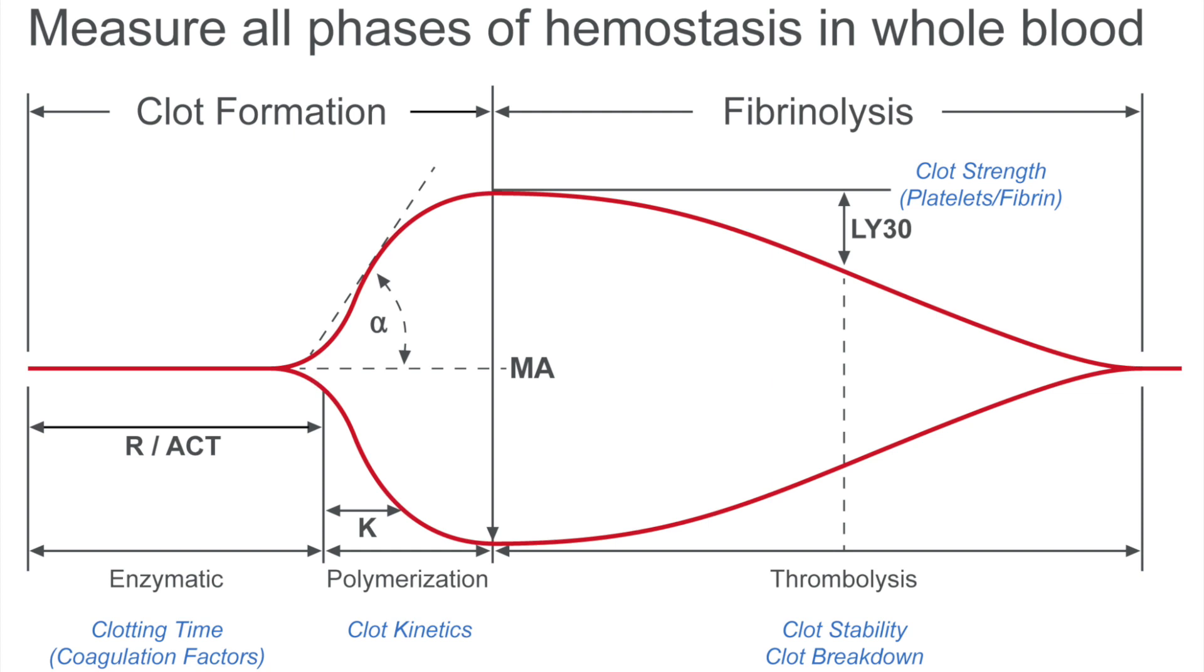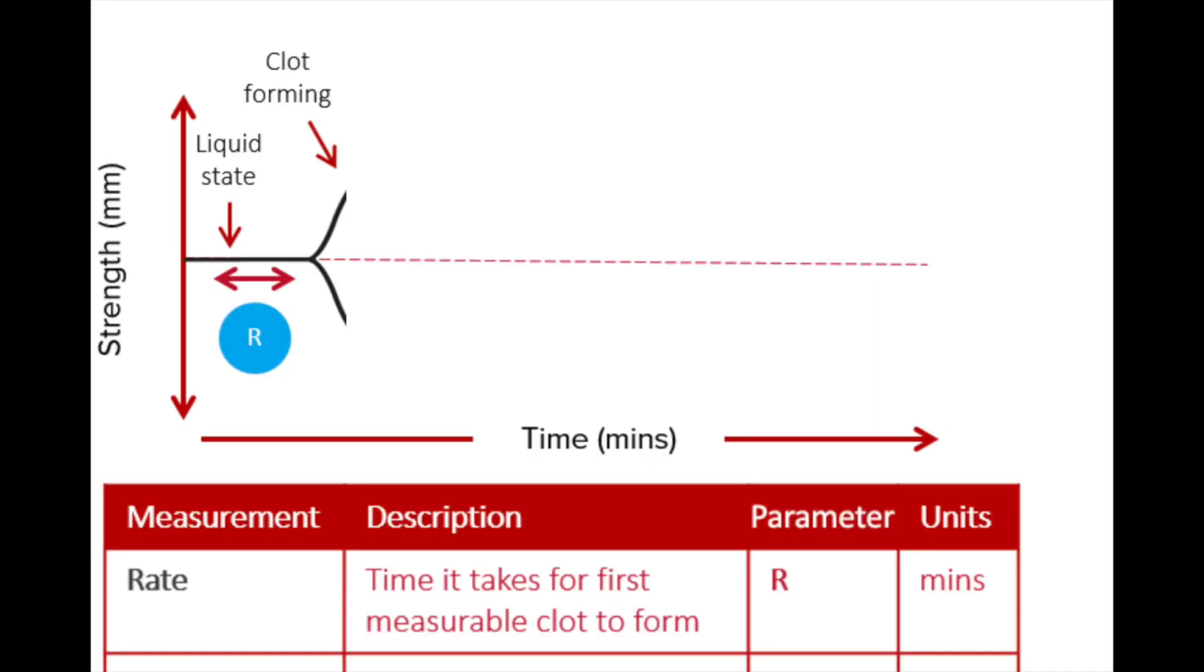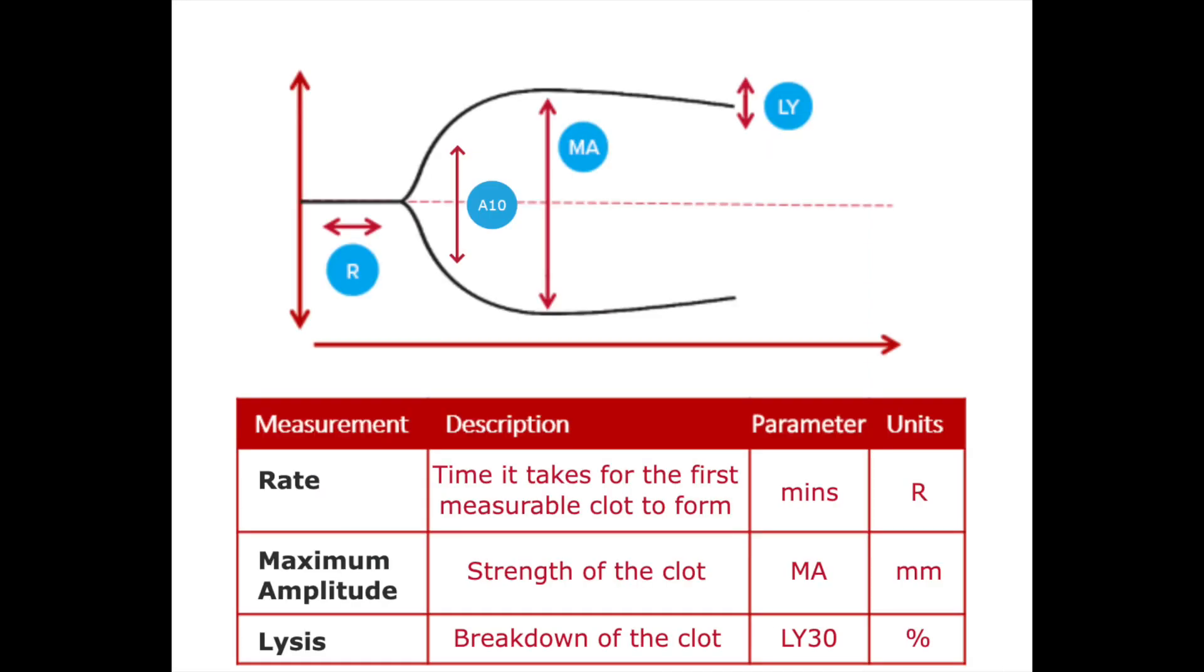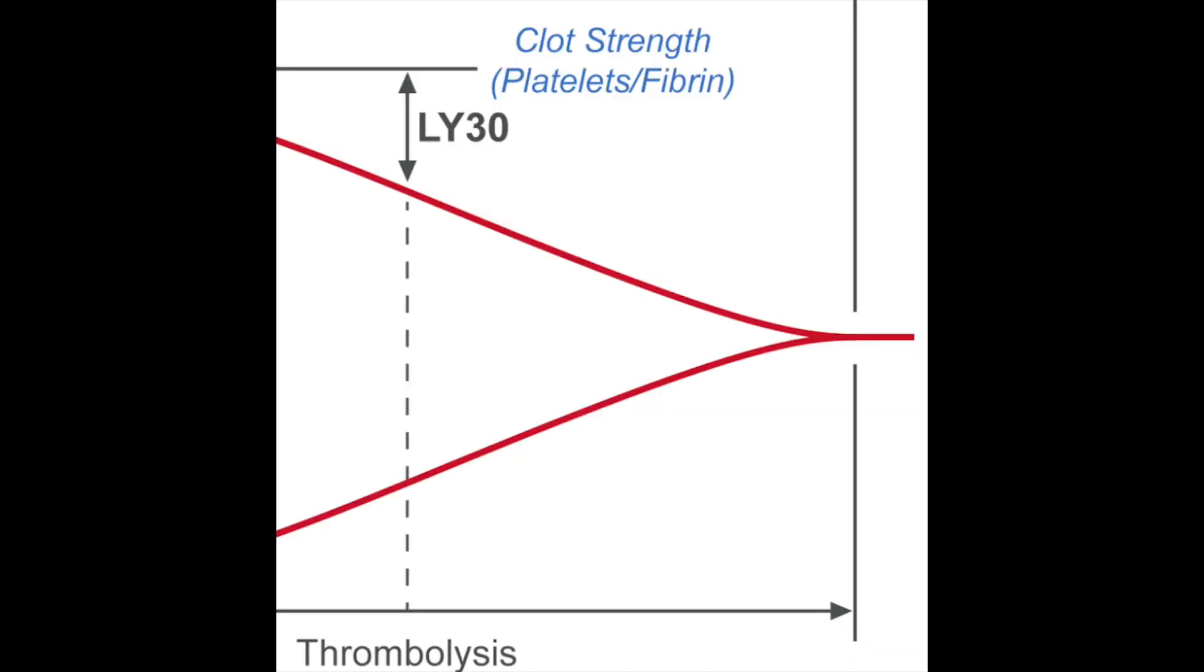How do we interpret TEG? There are five parameters to look into it. Number one is R time or the reaction time. The next one is K time. The third one is alpha angle or the clot kinetics. The fourth one is MA, the maximum amplitude. Fifth one is LY30.